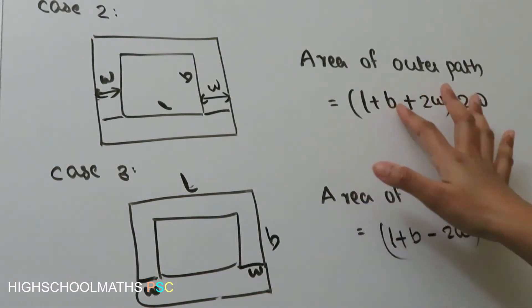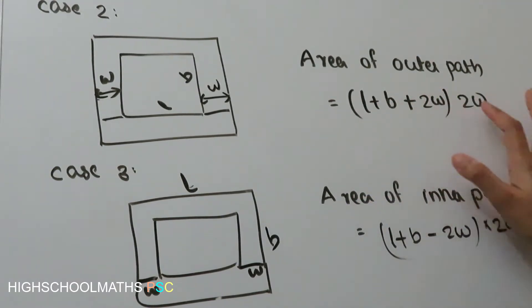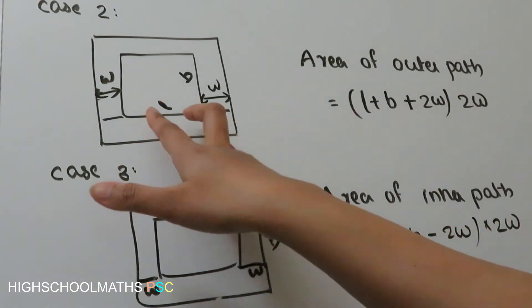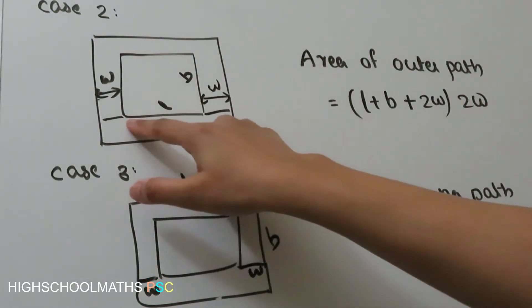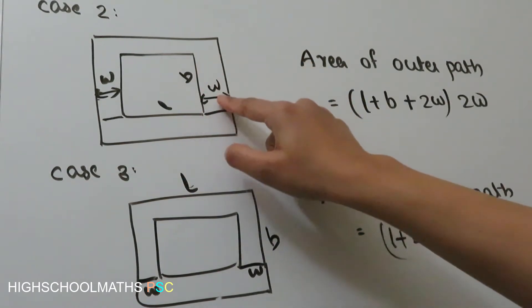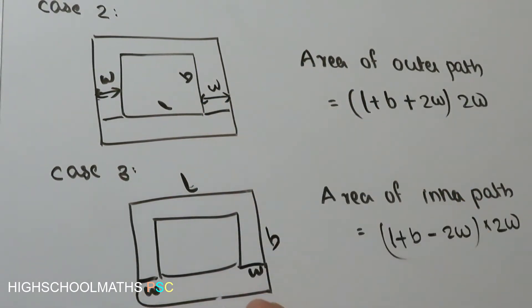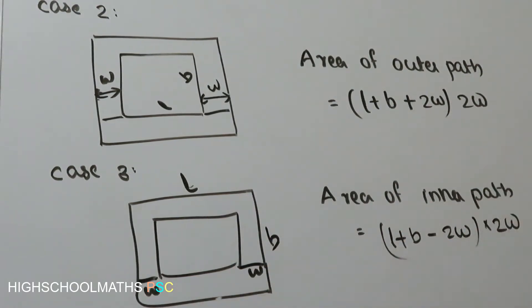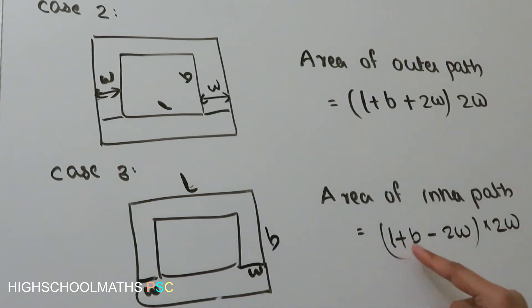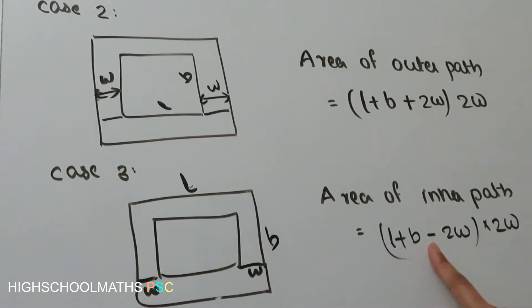In all cases, L plus B appears. For the outer path: L plus B plus 2W, into 2W. For the inner path: L plus B minus 2W, into 2W. In the first case, the formula is L plus B minus W, into W.